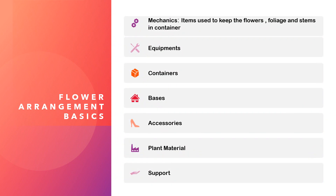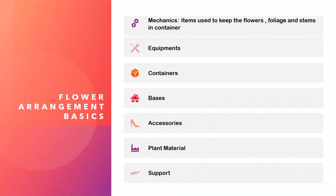Before we go into the detail, we have to first understand the basics of flower arrangements. They are categorized here as mechanics, which is nothing but the items used to keep the flowers, foliage and stems in the container. We shall also get introduced to the containers, bases and the accessories used in flower arrangement, the type of plant material and the kind of support needed for these various arrangements.